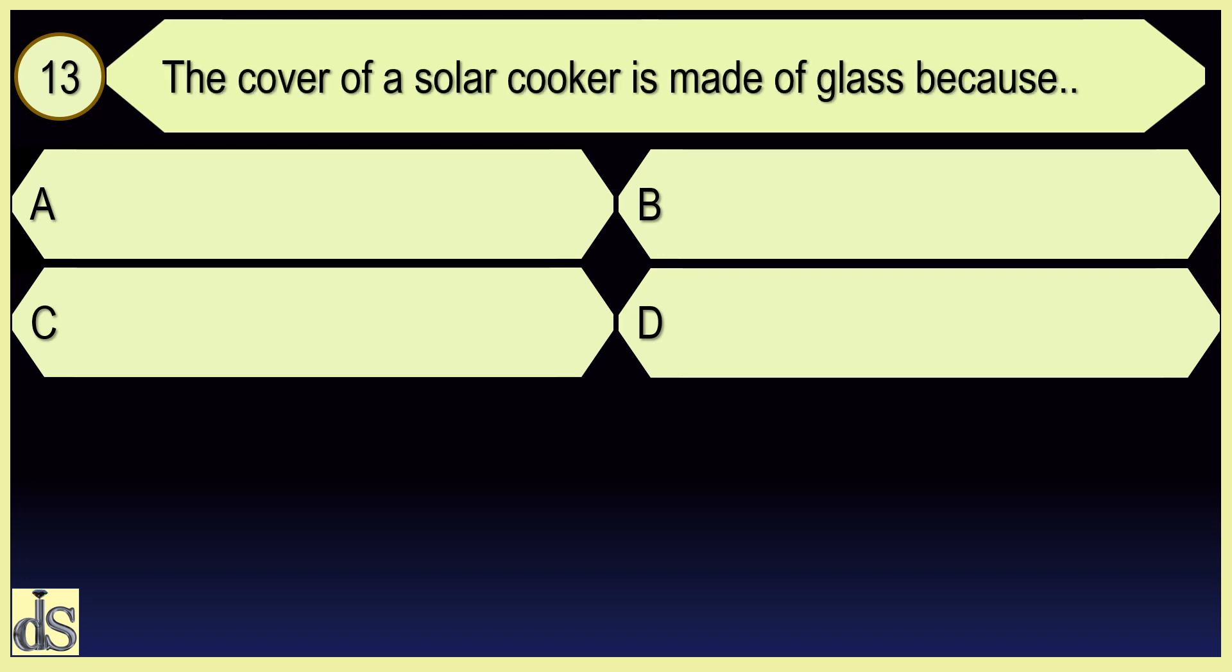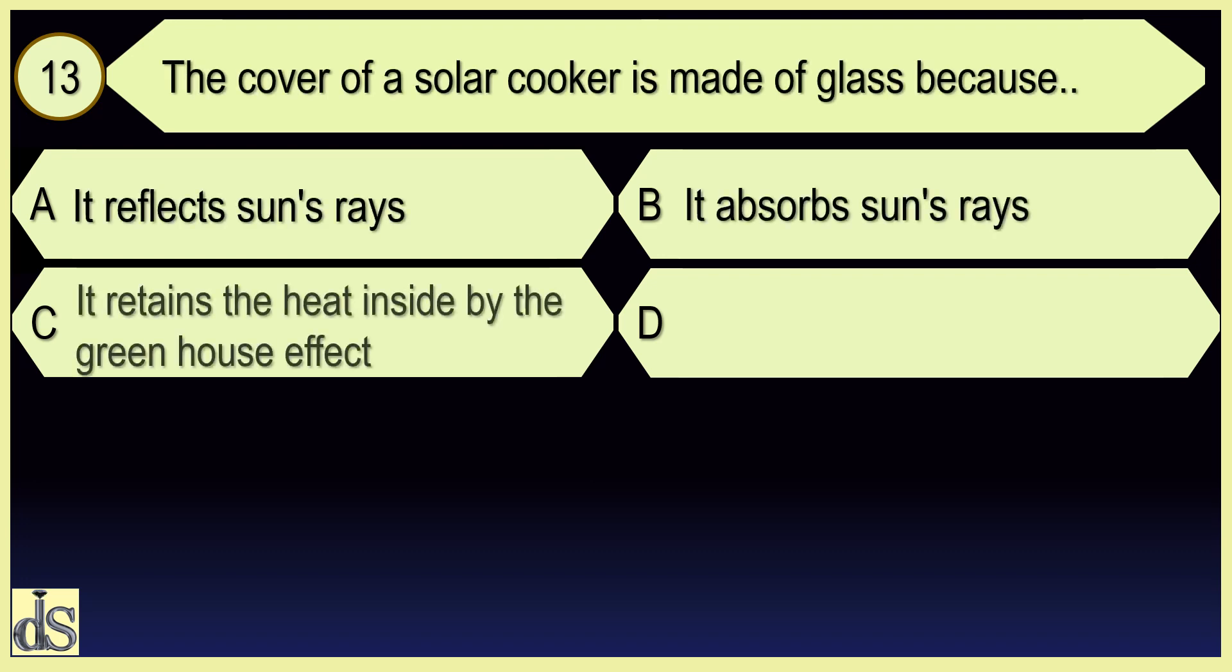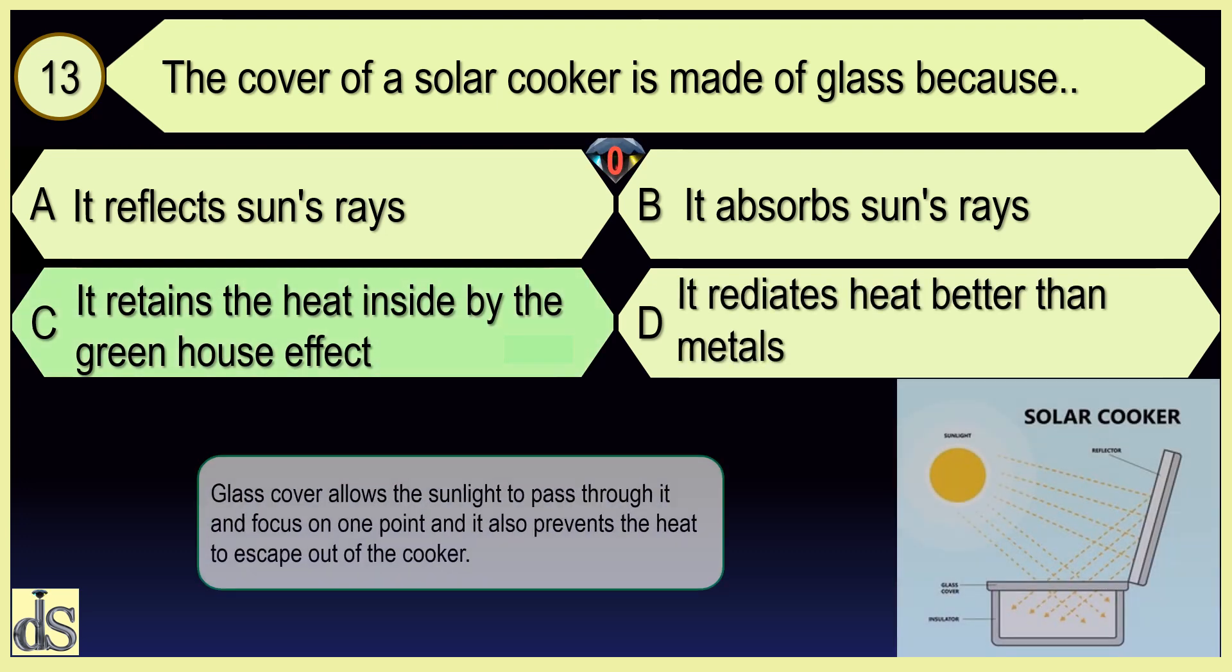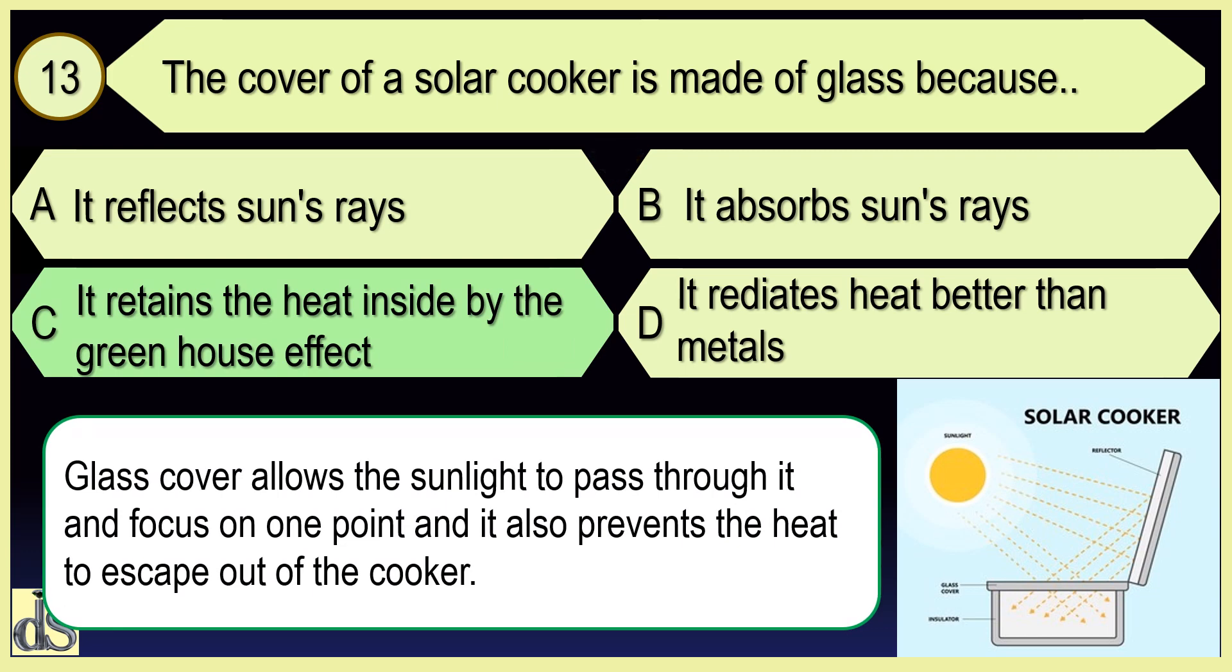The cover of a solar cooker is made of glass because it retains the heat inside by the greenhouse effect.